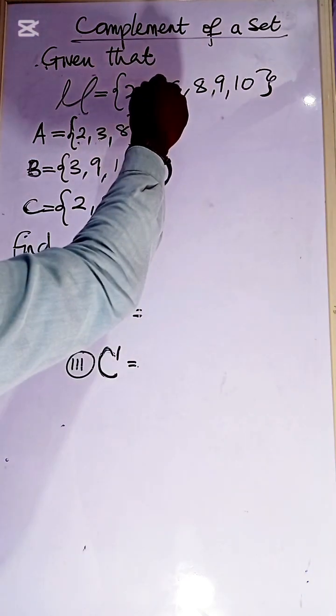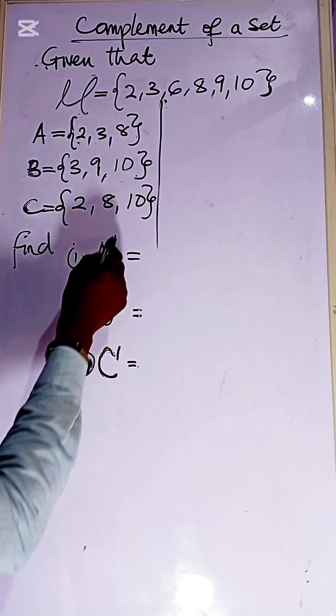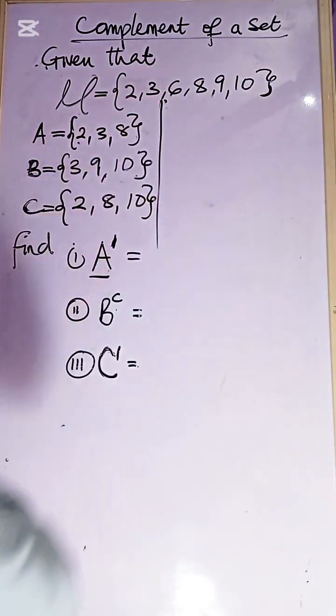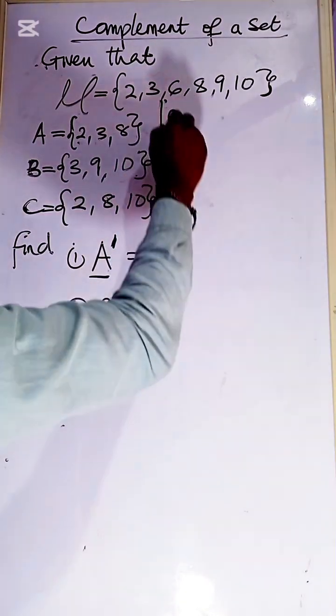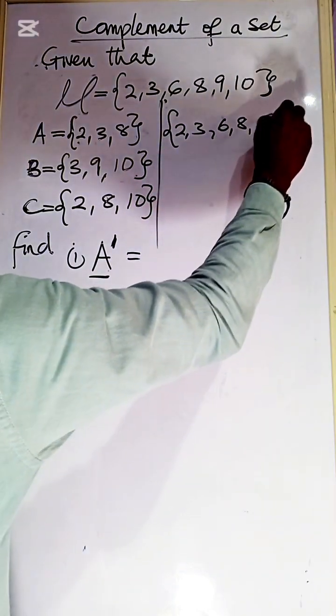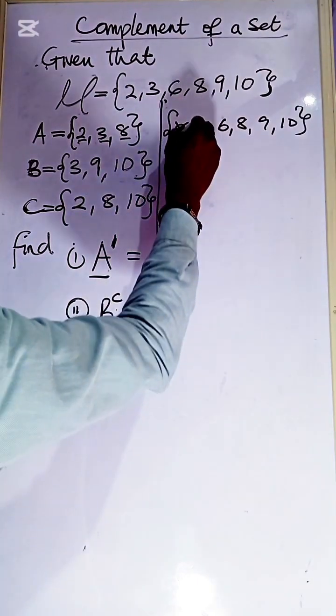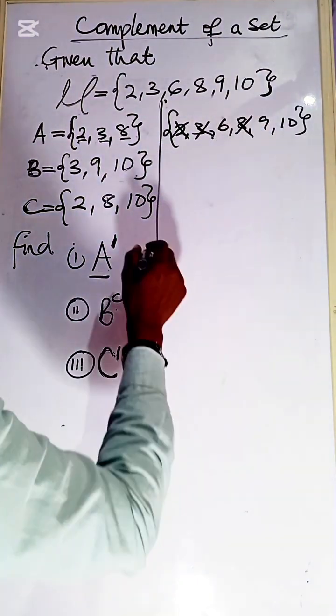So let's try to solve this question we have on the board. To find the complement of A or A prime, we are going to remove A from the universal set. So you remove 2, you remove 3, and remove 8.